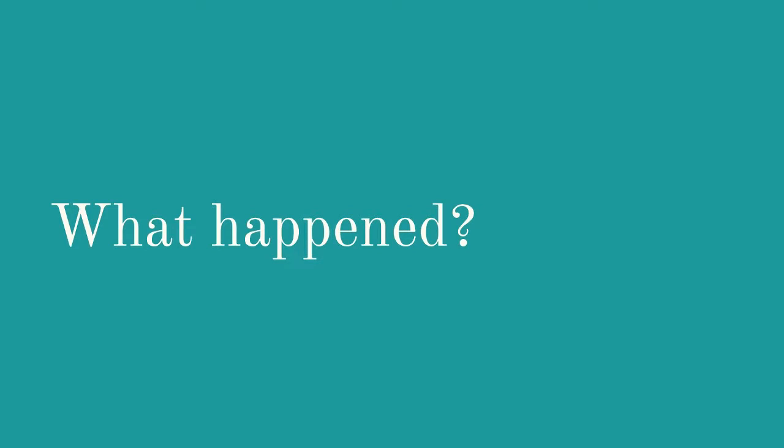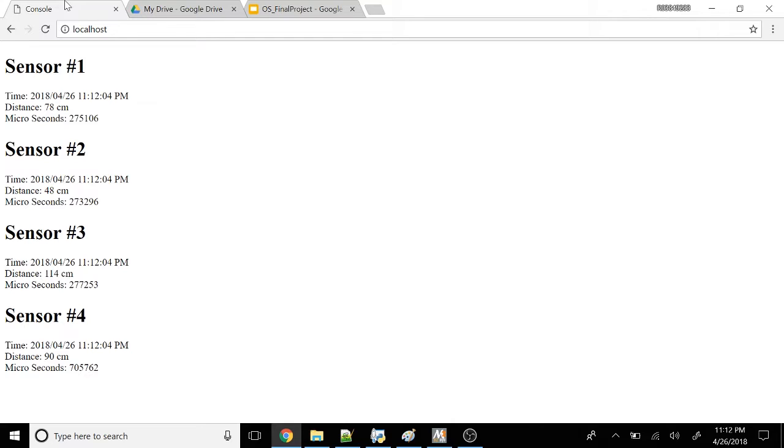This queue is then accessed from a different task, which checks to see if the queue is empty. If it's not empty, it dequeues, repackages a struct with the time value, the distance value, and the ID as a JSON object, and sends it over a UDP connection to our Python server.